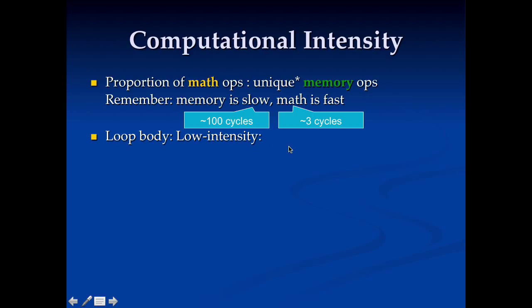So let's take a look at that. So let's see some low-intensity application loop bodies here. So say you're doing code like this. A of I equals B of I plus C of I. So we've got one math operation here and one, two, three memory operations. Very low. So I'm going to spend 300 cycles getting my data and one cycle, since it's add, doing my addition here.